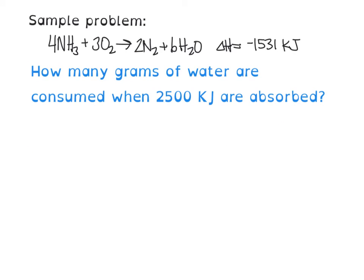Here's a sample problem. I've given you the thermochemical equation at the top and it says how many grams of water are consumed when 2,500 kilojoules are absorbed. Key thing here, it's asking you about water being consumed. In the reaction as it's written, water is a product, so it's not being used. So they're telling you when they want it consumed that the reaction would be flipped.